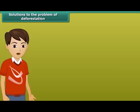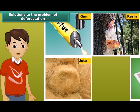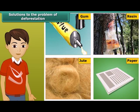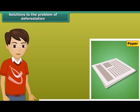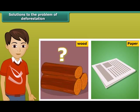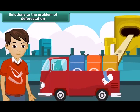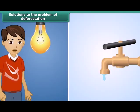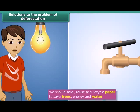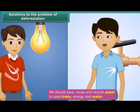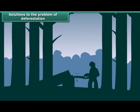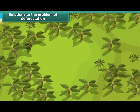We get many things from forests — gum, resin, jute, and paper are important products. Can you think of any alternatives available for paper? What would happen if we had no wood? Recycling of paper is the simple answer. Paper can be recycled five to seven times for use. By recycling paper, not only trees but also energy and water could be saved. Thus we should save, reuse, and recycle paper. However, recycling paper is a measure just for controlling deforestation temporarily.